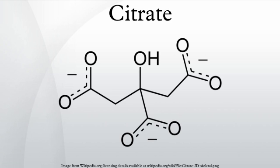Fatty acid synthesis: Citrate can also be transported out of the mitochondria and into the cytoplasm, then broken down into acetyl-CoA for fatty acid synthesis and into oxaloacetate. Citrate is a positive modulator of this conversion and allosterically regulates the enzyme acetyl-CoA carboxylase, which is the regulating enzyme in the conversion of acetyl-CoA into malonyl-CoA. In short, citrate is transported to the cytoplasm, converted to acetyl-CoA, which is then converted into malonyl-CoA by the acetyl-CoA carboxylase, which is allosterically modulated by citrate.